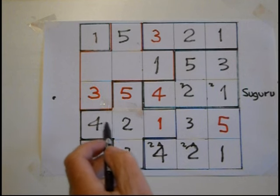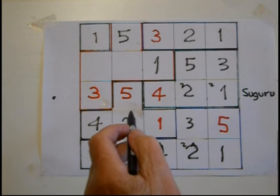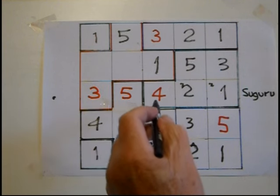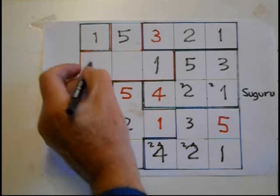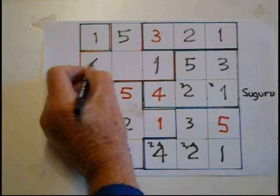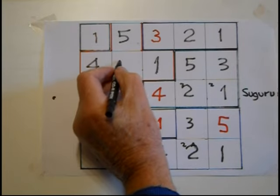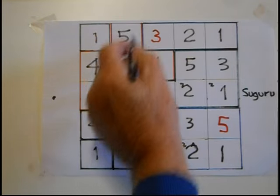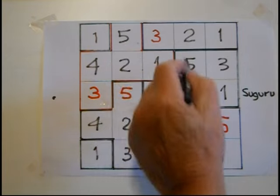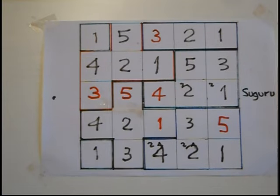We're looking for a 2, 3, or 4. Four is there so that cannot be 4; that must be 4 there, leaving 2. So 1, 2, 3, 4, 5 in that block. Solution solved.